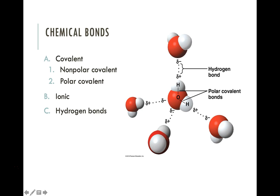During our last video we were talking about the types of chemical bonds that you find between atoms. We talked about covalent bonds where electrons are shared between two atoms, and ionic bonds where electrons are stripped from one atom and pulled to another, producing two ions — an anion and a cation.